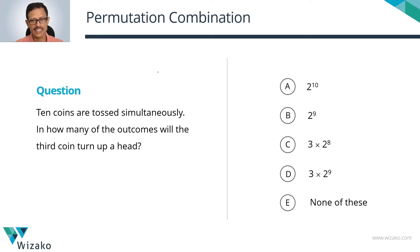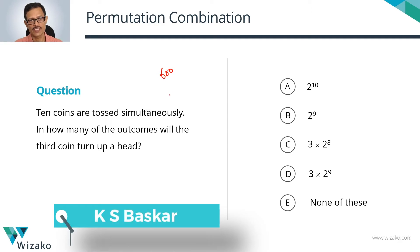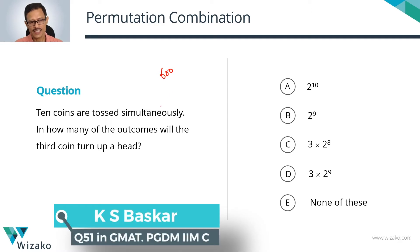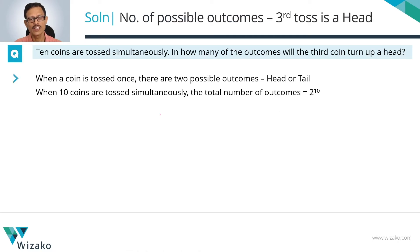This is an easy question. I'll classify it as a 600-level permutation combination question. 10 coins are tossed simultaneously. In how many of the outcomes will the third coin turn up a head? That's what the question is.